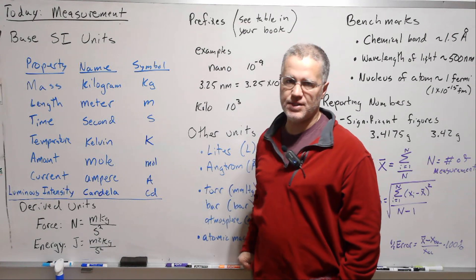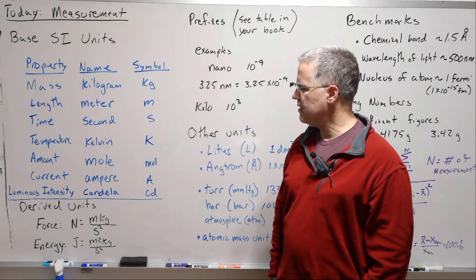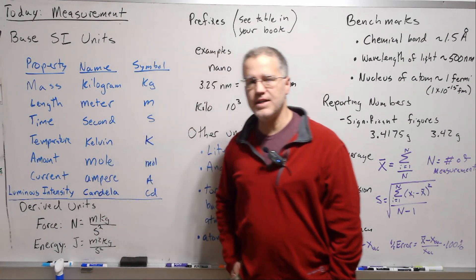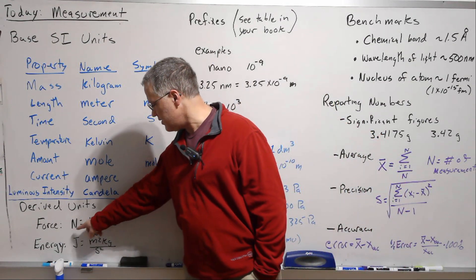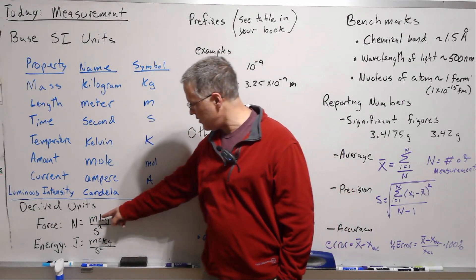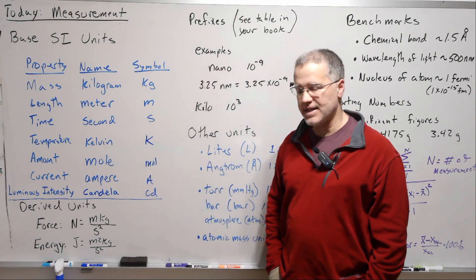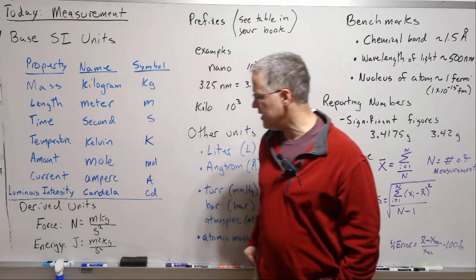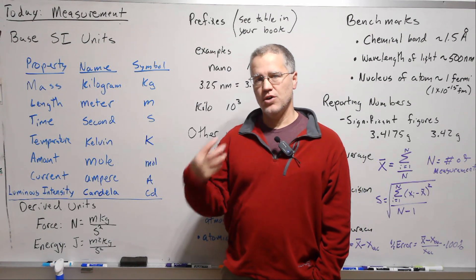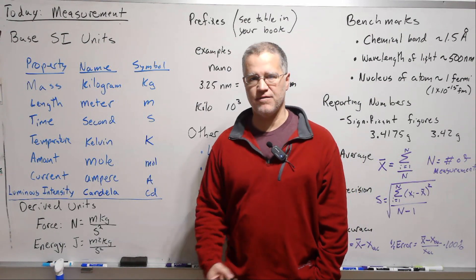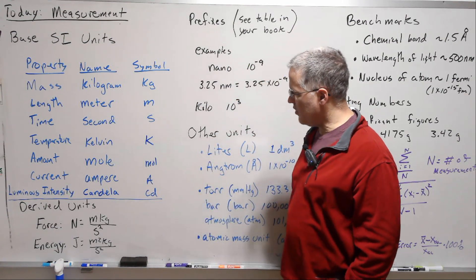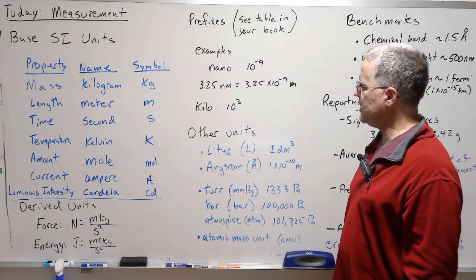These are the base units upon which other units can be derived. For example, force has the SI unit of Newton (symbol N), and a Newton is made up of base units: meter·kilogram divided by second squared. Energy uses the joule as the SI unit, also made up of base units. As we go through the course introducing new ideas, all these quantities will carry units and we'll want to connect them back to SI units.